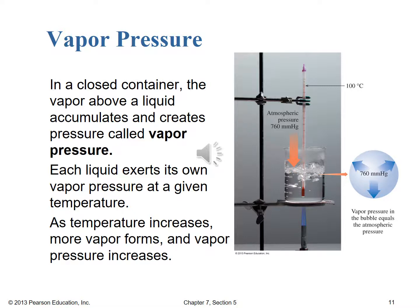In a sealed container, the liquid exerts its vapor pressure at a given temperature. This is temperature dependent: as temperature increases, more liquid converts to vapor, creating higher vapor pressure. This is why it's very dangerous to heat sealed containers — as vapor pressure builds, the container walls can fail, causing hot vapor and liquid to spray out. Tossing a sealed container into a fire will very quickly and dangerously demonstrate how important vapor pressure can be.